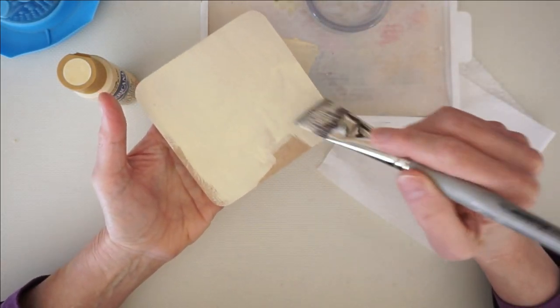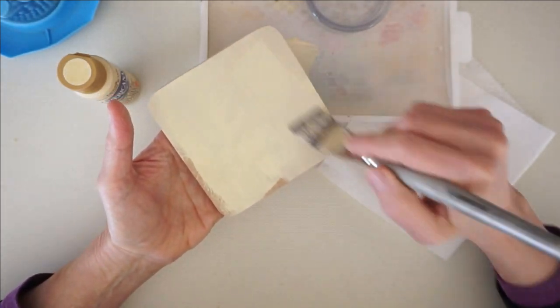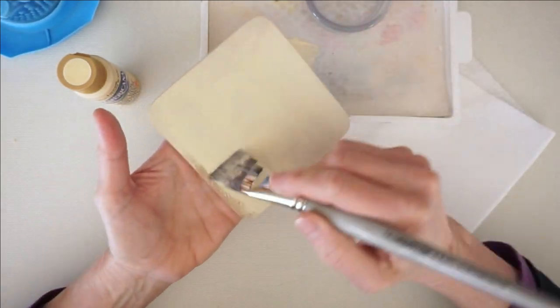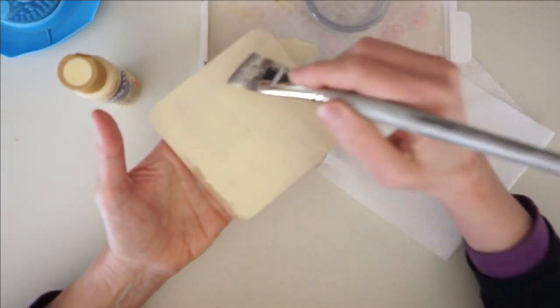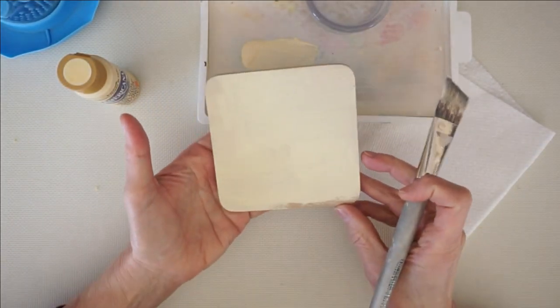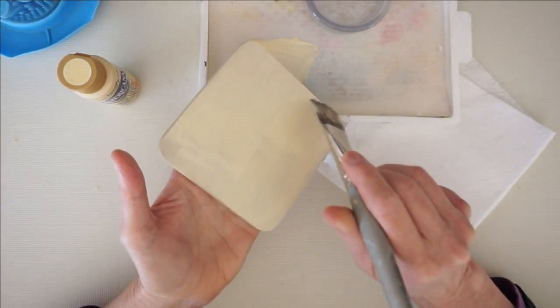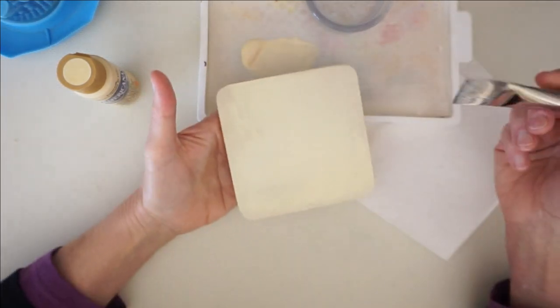And you don't want to have to sand it, because once you start sanding, again, you're going to ruin the integrity of the shape, and it's not going to seat in cleanly. So as you can see, it's covering but not covering great, but it's good enough. This is the first coat.